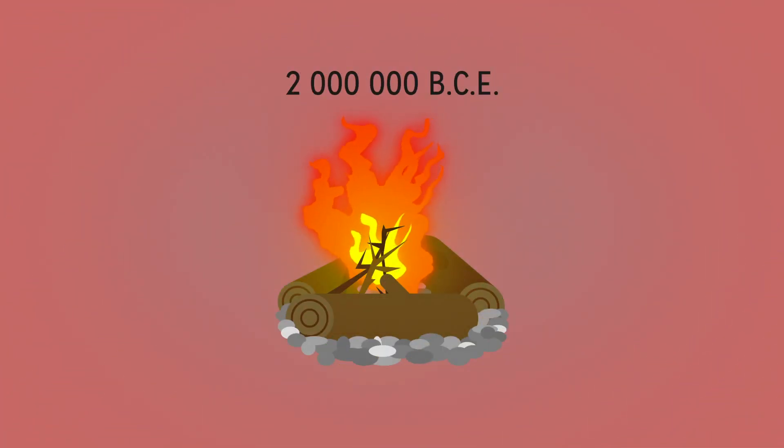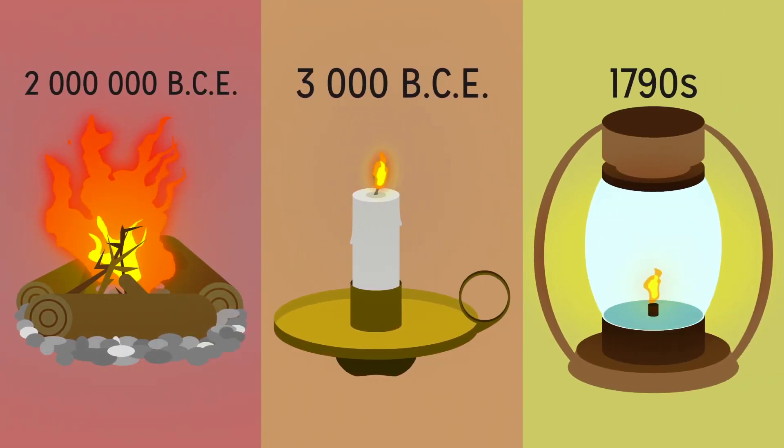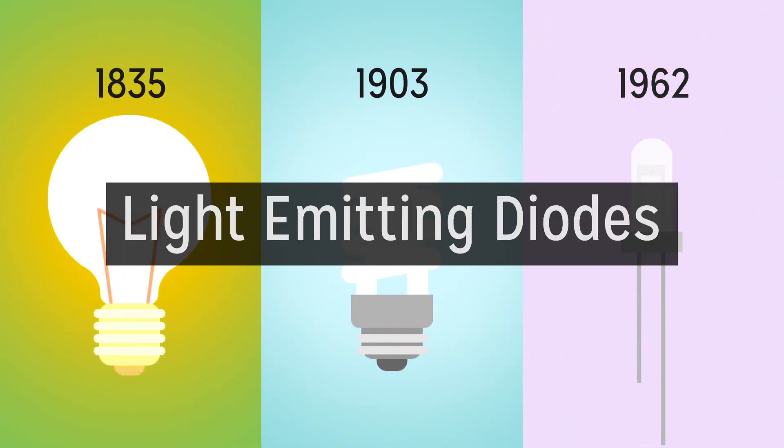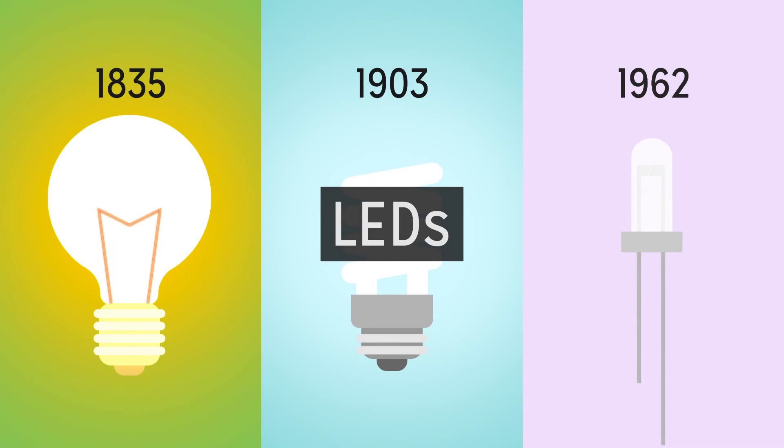That search for light led to the discovery of fire, which was followed by candles, gas lamps, incandescent bulbs, fluorescent lights, and finally, light-emitting diodes, LEDs, the most efficient source of light we have created so far.